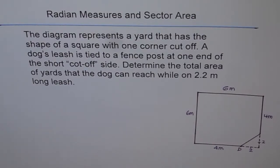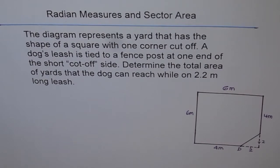Radian measures and sector area. The diagram represents a yard that has the shape of a square with one corner cut off.